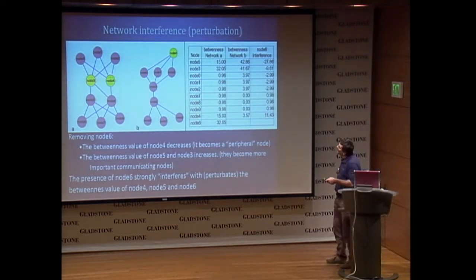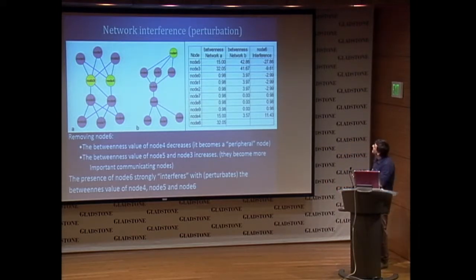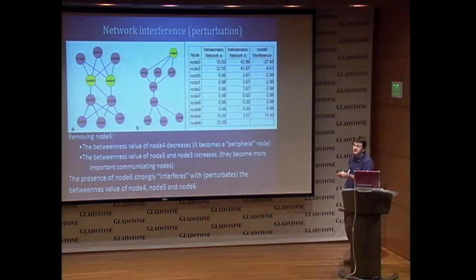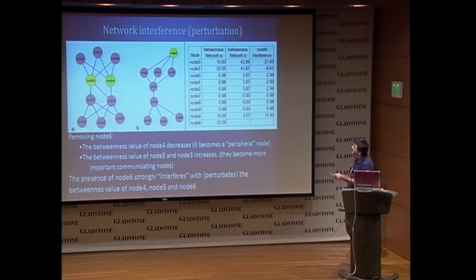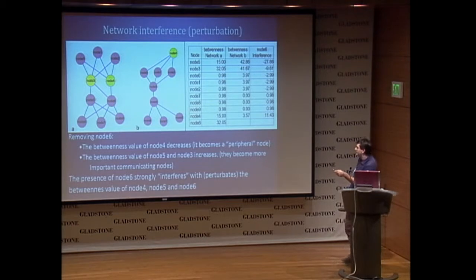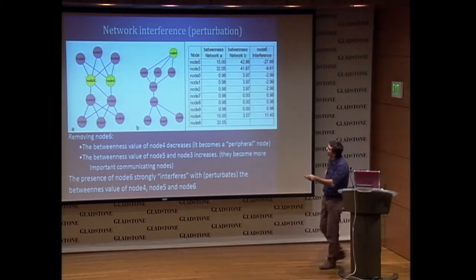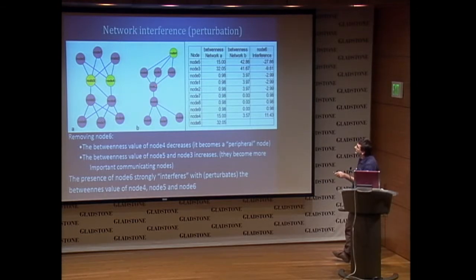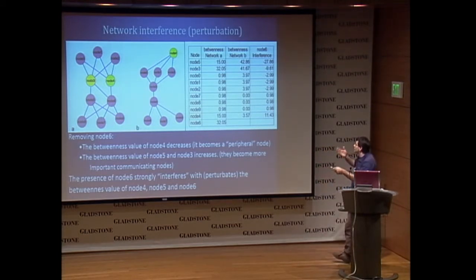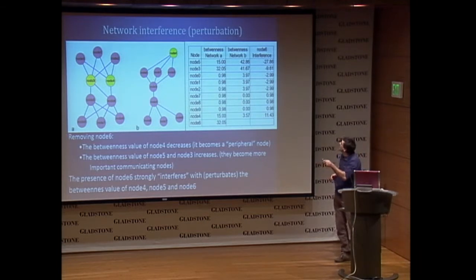We can see the effect of removing the node — the betweenness of node 5 and node 3 increases. You take the betweenness, the difference of betweenness in network A and network B, and you see the betweenness increases for node 5 and node 3, while for node 4, the betweenness decreases because it is now a peripheral node. So the presence of node 6 in the network perturbates or interferes with node 3, node 5, and node 4. This is the definition of interference: just the difference of centrality in the two networks.